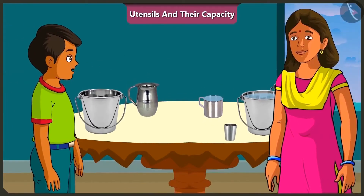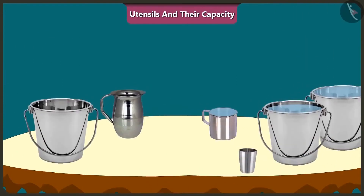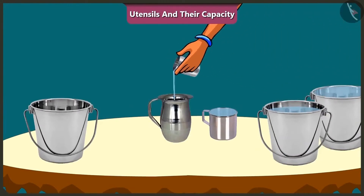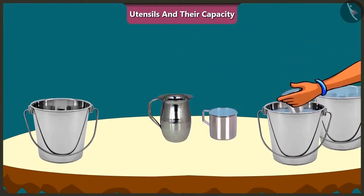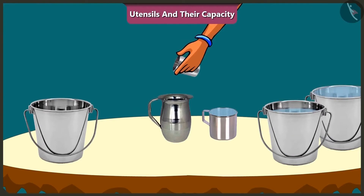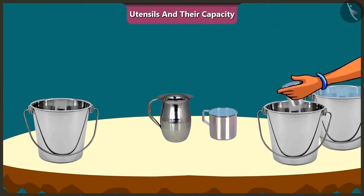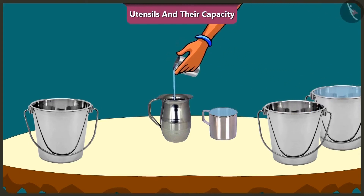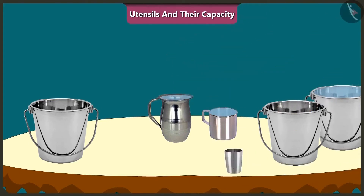Now, with the help of the same glass, we will fill this jug with water. One, two, three, four, five and six. The jug is completely filled. So the capacity of this jug is equal to six glasses of water.